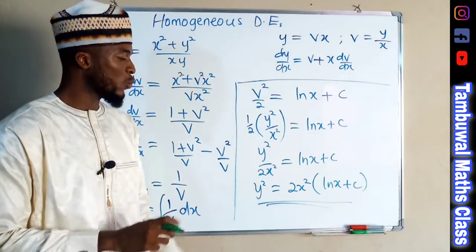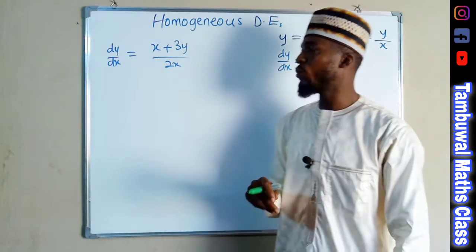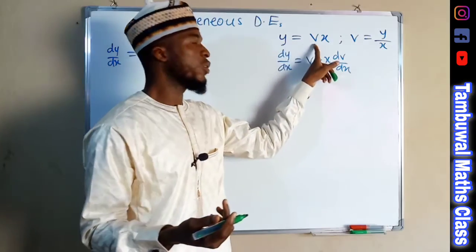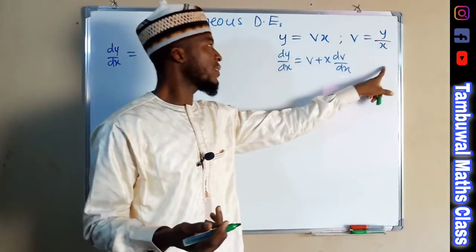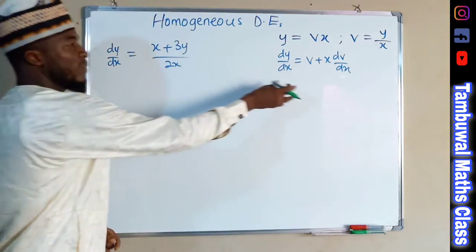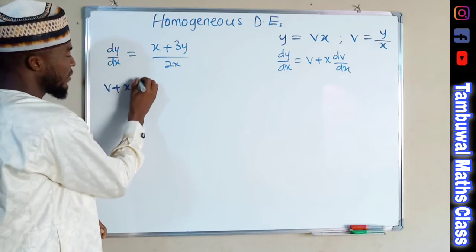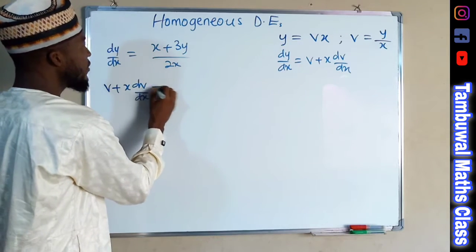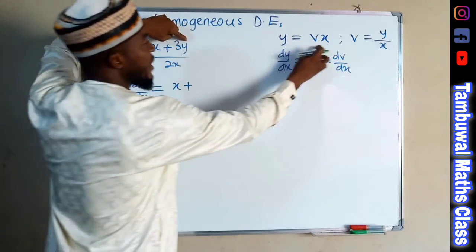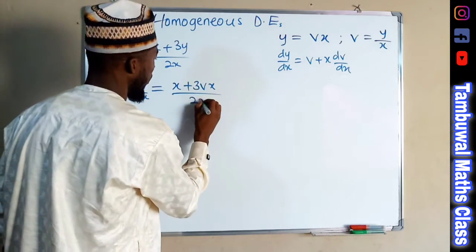Now let us look at the next problem. We have dy over dx equal to x plus 3y over 2x. We apply the same principle: y equals vx, and v equals y over x. dy over dx equals v plus x dv over dx. Replacing dy over dx and y, the right-hand side becomes x plus 3 times vx, all over 2x.